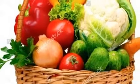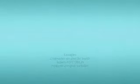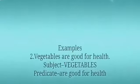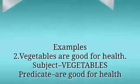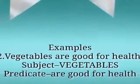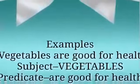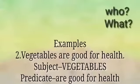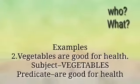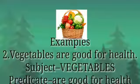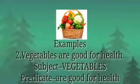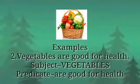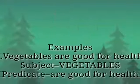Let's see a few more examples. Vegetables are good for health. So what is the subject here? As I said already, you can easily find out the subject by asking the question 'who' or 'what.' So, vegetables are good for health — what is good for our health? It is vegetables. So we can easily find out 'vegetables' as the subject, and the remaining words come under predicate.